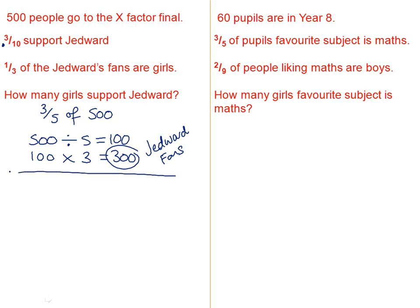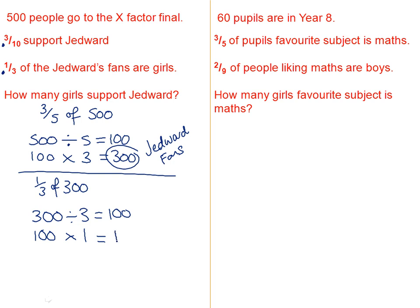The next step of the question says one-third of Jedward's fans are girls. How many girls support Jedward? There are 300 Jedward fans and we need to work out what one-third of that is. So we're trying to find one-third of 300. Same method — take our 300 and divide it by the bottom of the fraction, which is 3. That will give us 100. And then we take this 100 and we times it by the top of the fraction, which is 1. So 100 times 1 is just 100. So 100 of Jedward's supporters are girls.